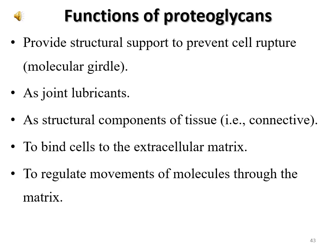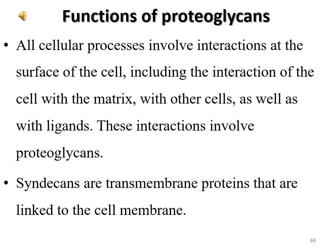Functions of proteoglycans: they provide structural support to prevent cell rupture. Joint proteoglycans are used as structural components of connective tissue to bind cells through the extracellular matrix and to regulate movements of molecules through the matrix. All cellular processes involve interactions at the surface of the cell — including interactions with the matrix, with other cells, and with ligands. These interactions involve proteoglycans. Syndicans, an example of proteoglycans, are transmembrane proteins linked to the cell membrane.